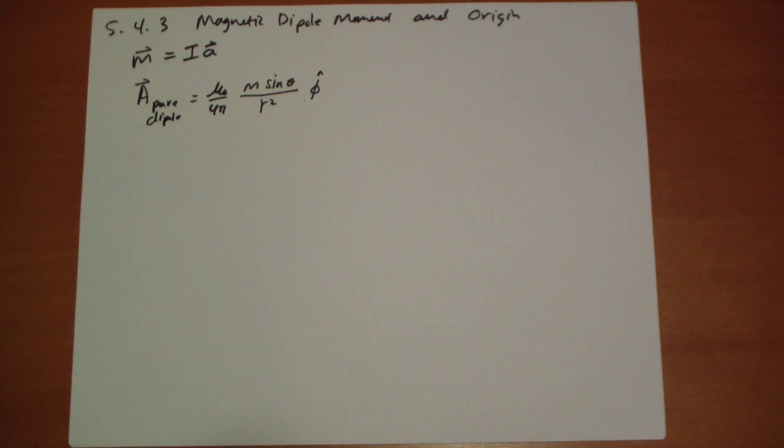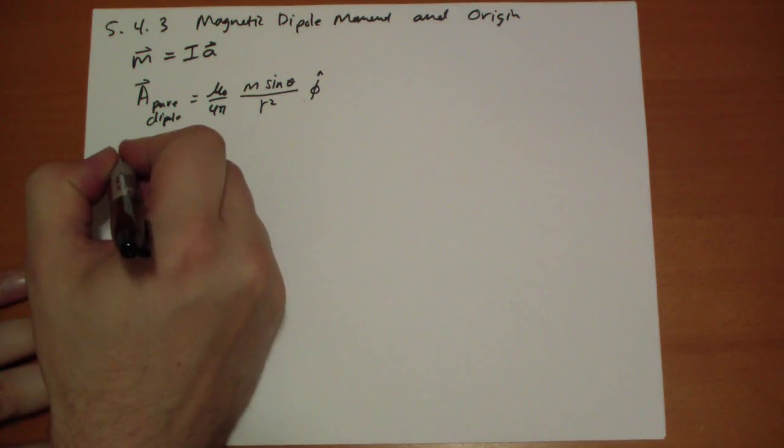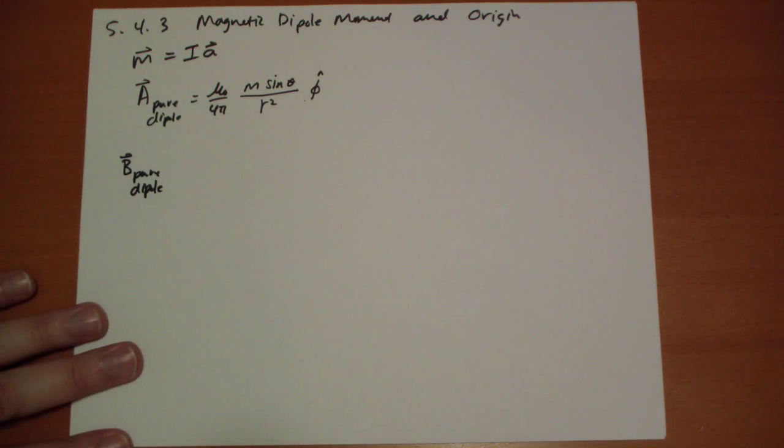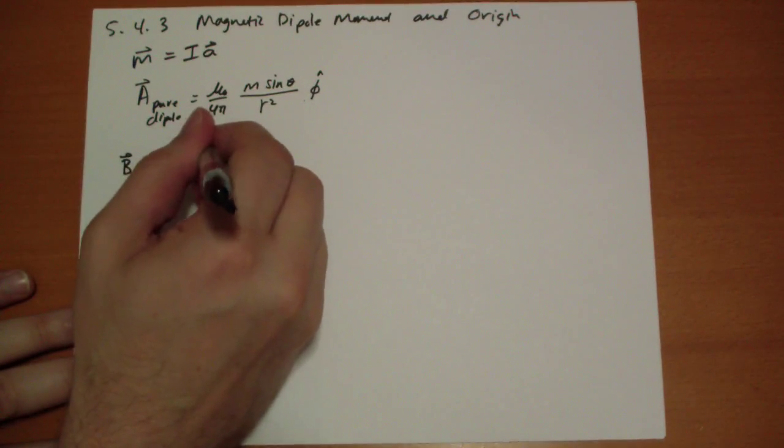Now, not surprisingly, b equals the magnetic field of the pure dipole is just the curl of A.